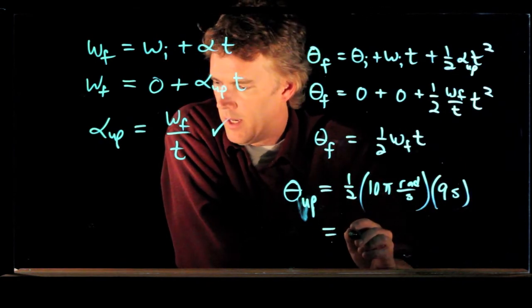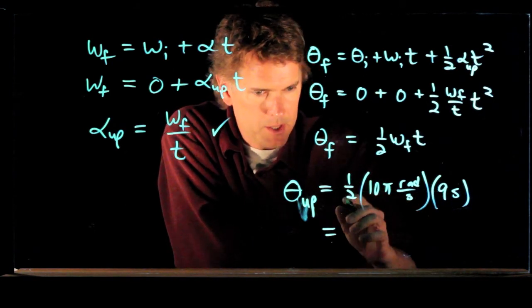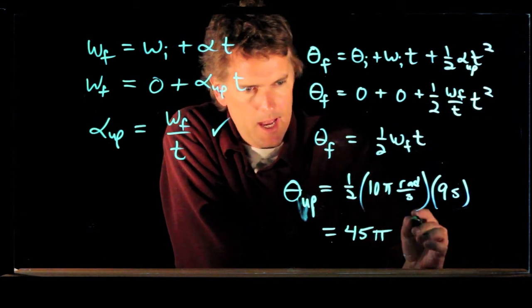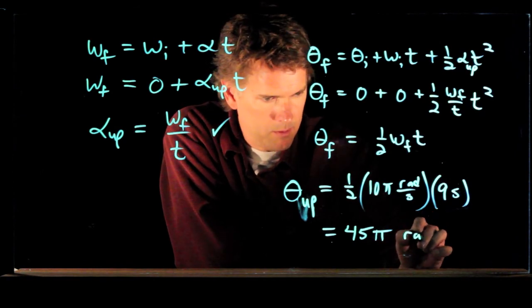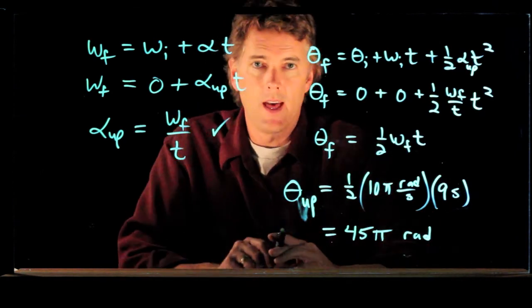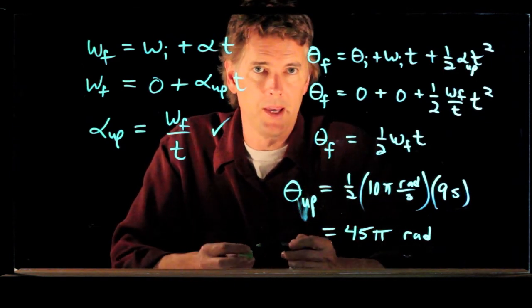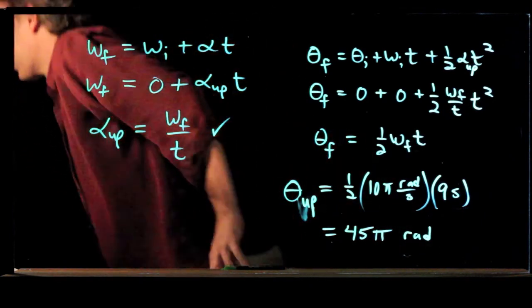And what do you get if you multiply all this out? Well, 10 times 9 is 90, divide that by 2, I get 45, and then I still have a pi hanging out there. 45 pi radians. That's how far it rotated while it was spinning up during that first 9 seconds.